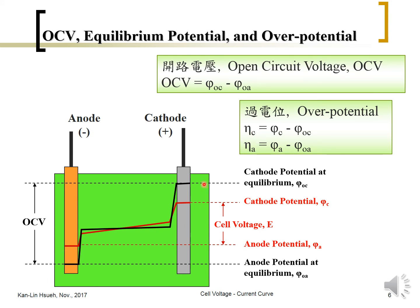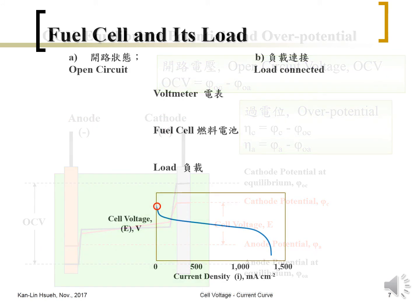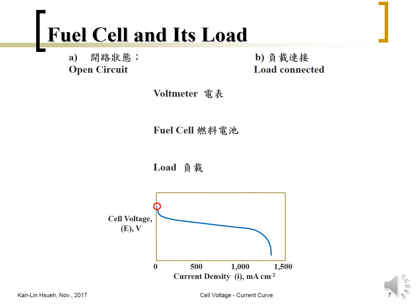The overpotential describes how much the electric potential deviates from its equilibrium state. In the Butler-Volmer equation, written in simplified form, the current density is expressed as a function of the overpotential — that is, the actual potential minus the equilibrium potential.